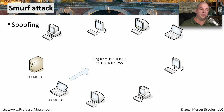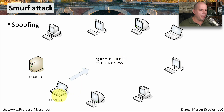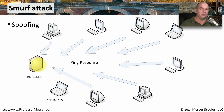The Smurf attack takes advantage of spoofing, where you change the IP address you're sending from. In this case, I am 192.168.1.22. I'm going to send a ping out to the broadcast address. Prior to being patched, every device that received a broadcast ping would respond. But instead of sending it from our IP address, we send it from the victim server's address, 192.168.1.1. So I spoof that address, send it to the broadcast, and all devices on the subnet reply to the ping — sending responses back to the spoofed address, not the original device. Suddenly, that server is receiving lots of responses to a request it never made.